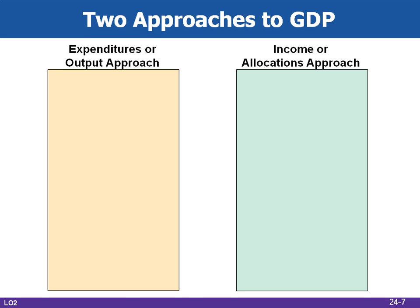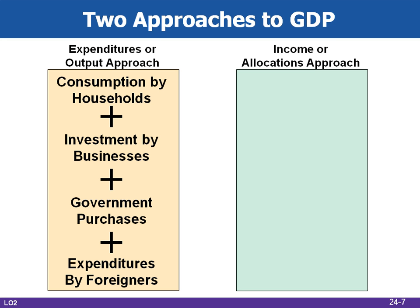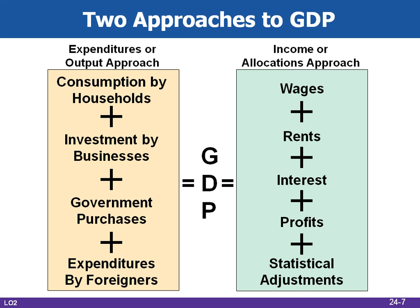Here are the two different approaches to measuring GDP. On the left, the expenditures approach measures GDP as the sum of four items: first, consumption of households; second, investment by businesses; third, government purchases; and fourth, expenditures by foreigners, or net exports. On the right, the income approach uses wages, rents, interest, profits, and statistical adjustments. Both equal the same number, giving us GDP.